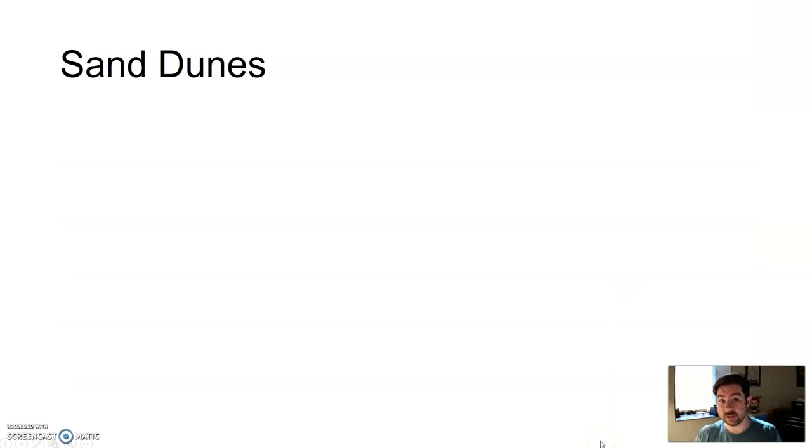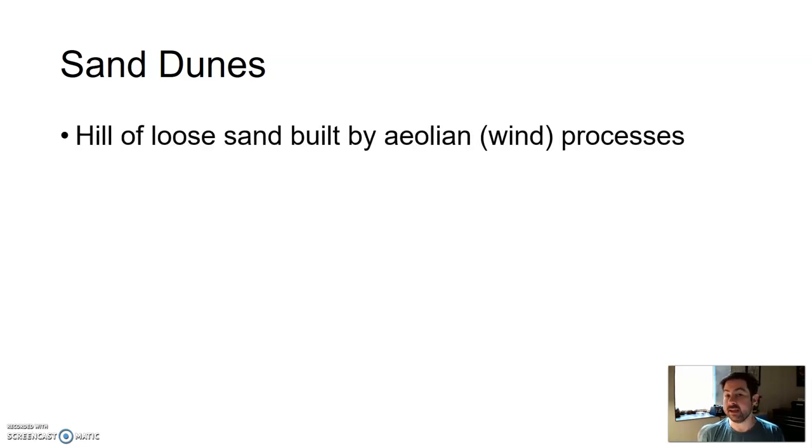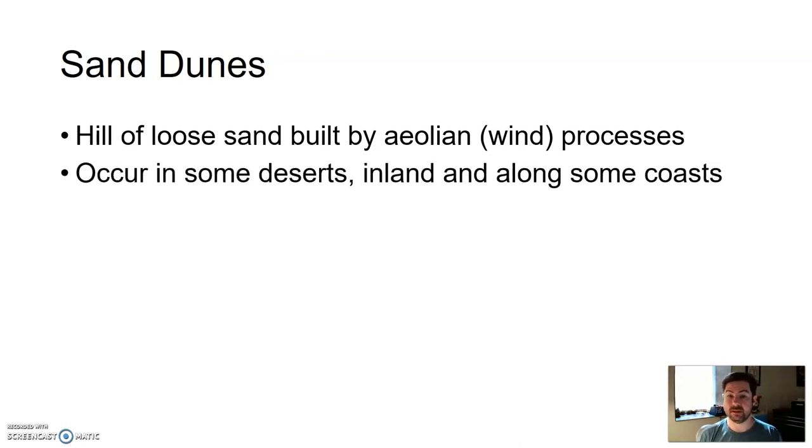Sand dunes. If you've ever driven from Phoenix to San Diego, as you're getting towards the border of California, there are some areas of sand dunes there. Sand dunes are just hills of loose sand built by eolian processes, wind processes. They occur in some deserts, typically inland or along some coasts.